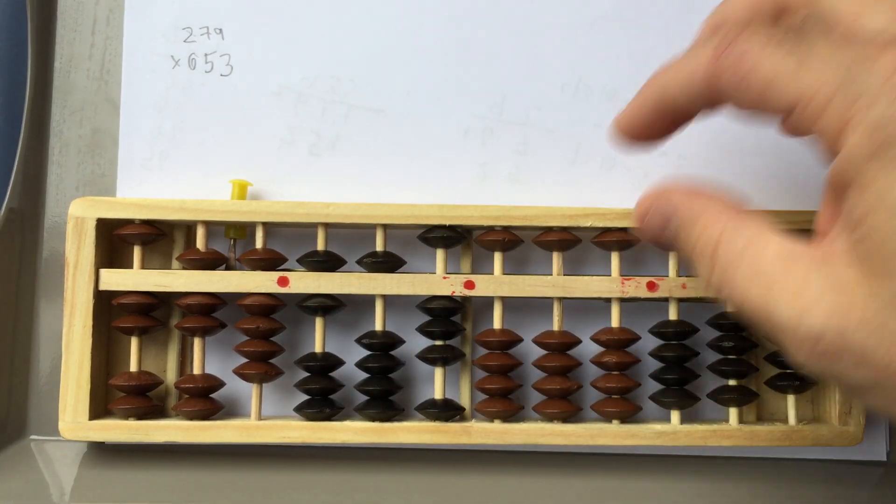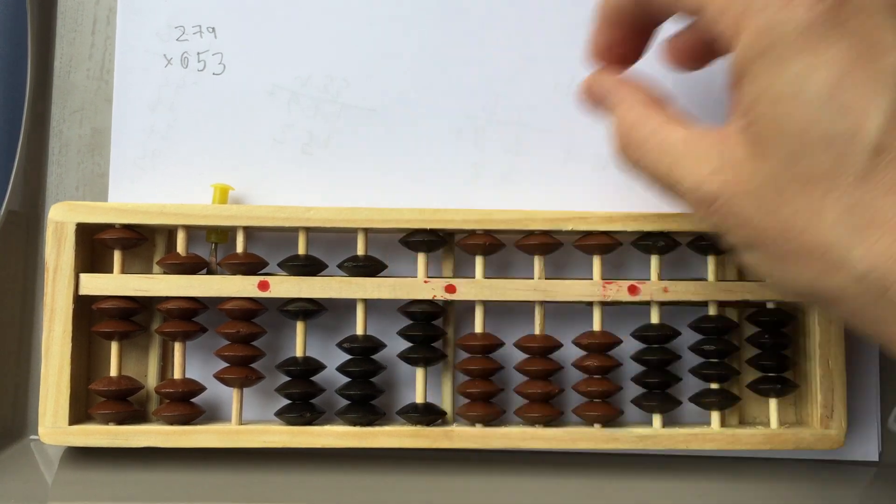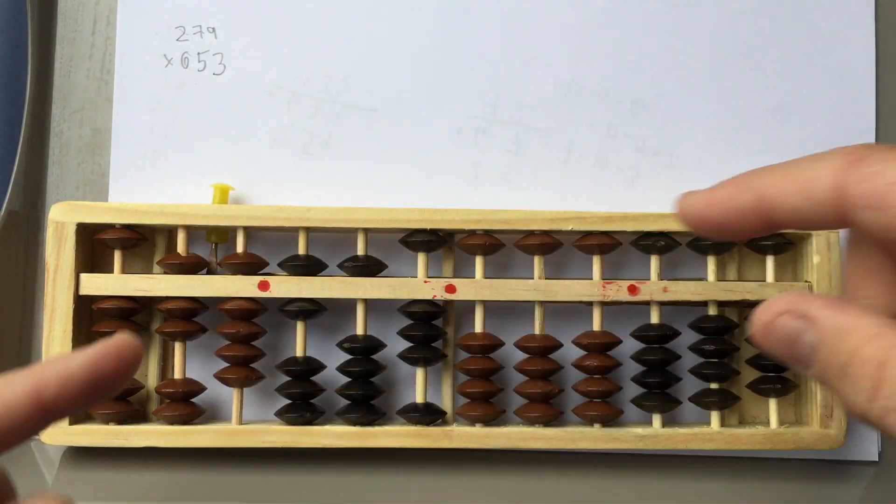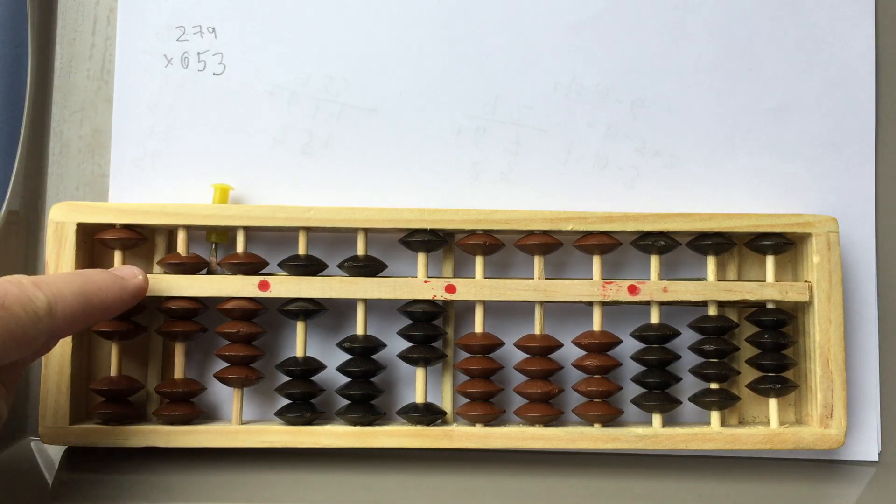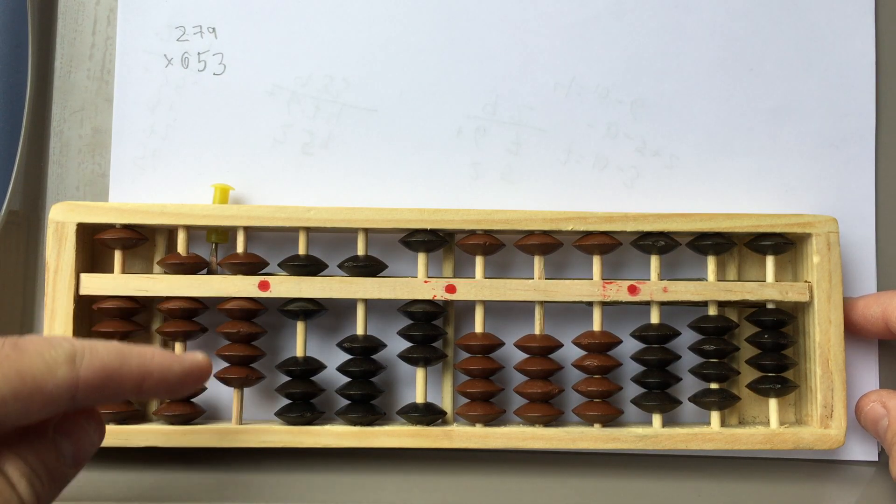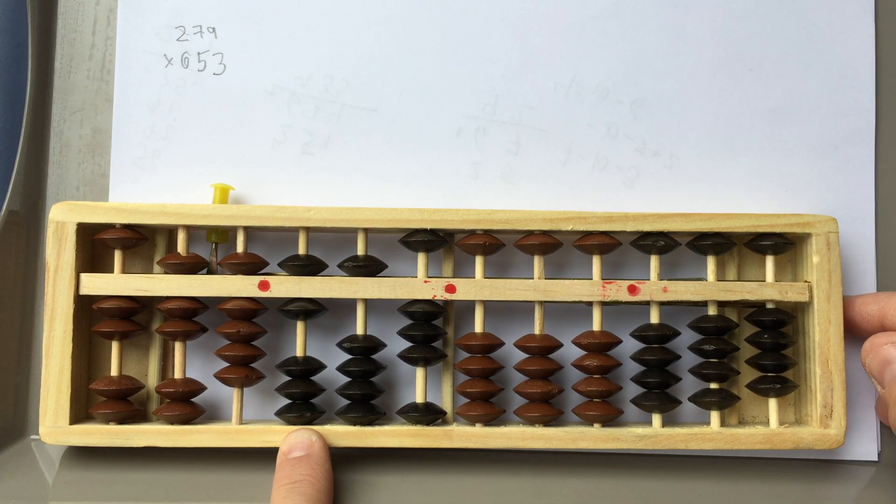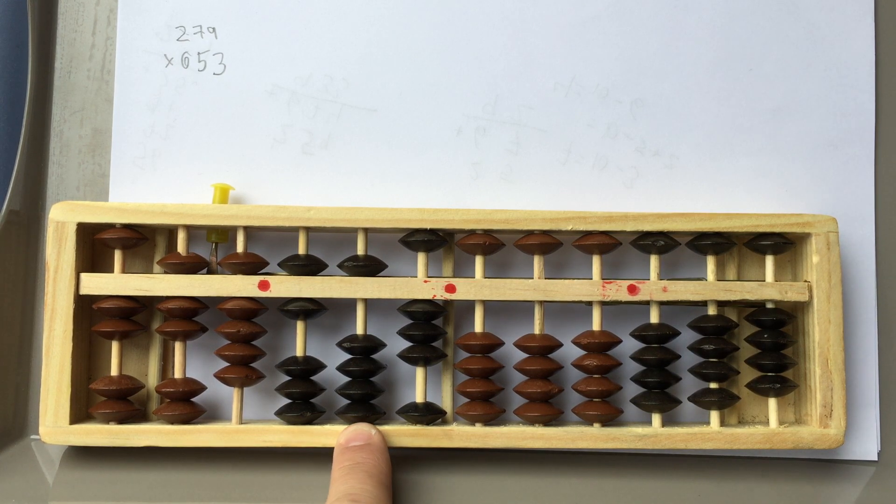And 6, I'll put 653. Now, you don't have to put that on this Soroban. I just happen to do that because I find it easier to put it in, but you can do it on paper anyway. But anyway, that's 279. This would be times 653.